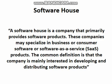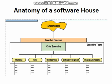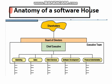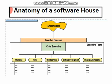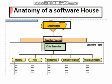The common definition is that the company is mainly interested in developing and distributing software products. The anatomy of a software house starts with shareholders, then the board of directors, then the chief executive officer (CEO), and then the executive team, which includes marketing, client services, software development, finance, administration, and sales.